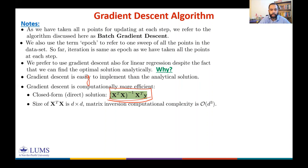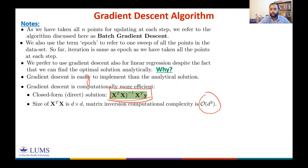By contrast, Xᵀy has size d (y is size n, Xᵀ is d × n). Assuming d is large, d³ dominates, so the computational complexity of the direct analytical solution via matrix inversion is O(d³).